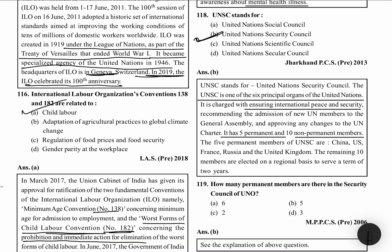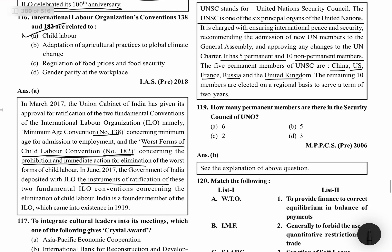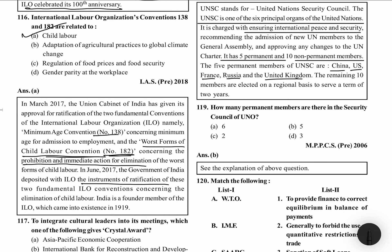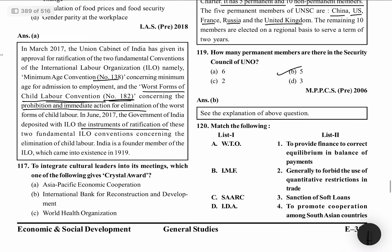The 5 permanent members are China, USA, France, Russia, and UK. The non-permanent members are 10 in number and they are elected on a regional basis for 2 years. How many permanent members are there in the Security Council of the UNO? Permanent members are 5 and total non-permanent are 10.